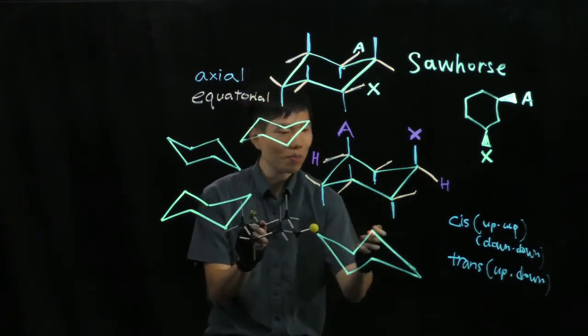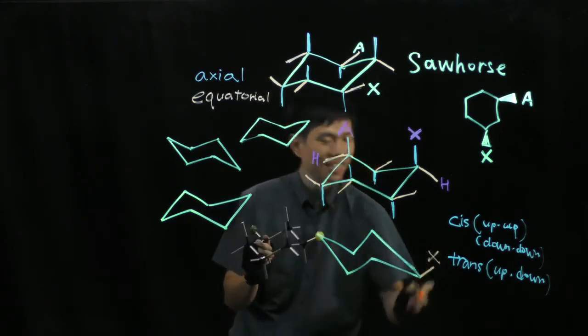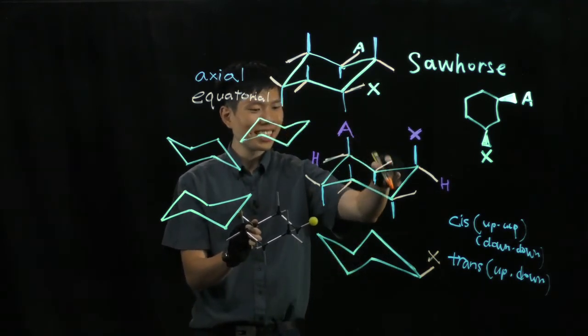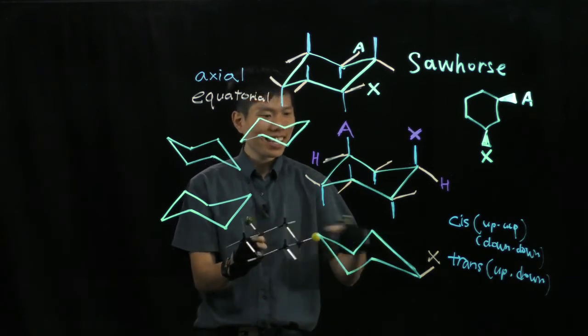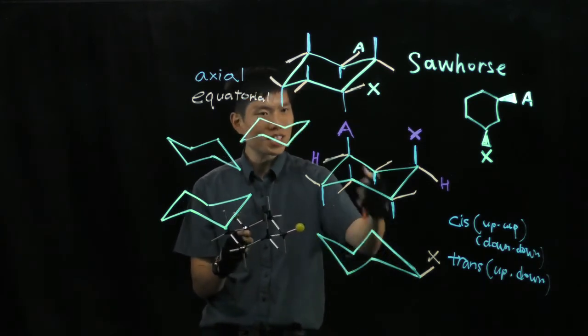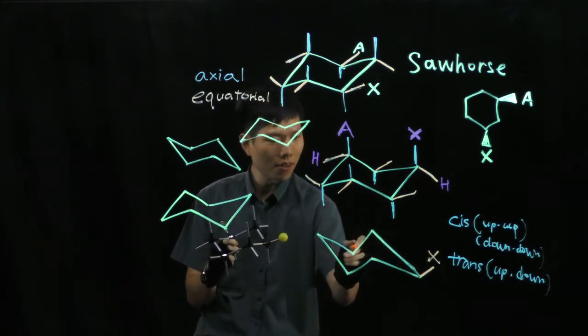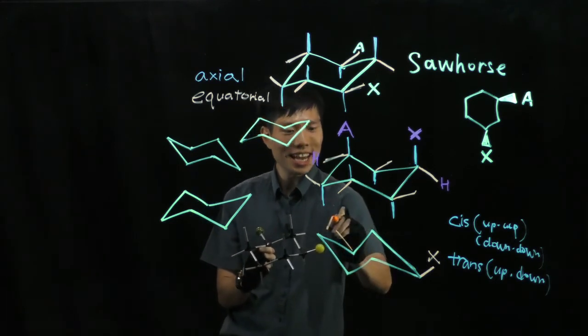You see this yellow ball here, up, this must be X. And what happens to A? You go and count. One, two, three. It's at the back now. And now it is equatorial because previously it's axial. So this way is down, up, down, up.